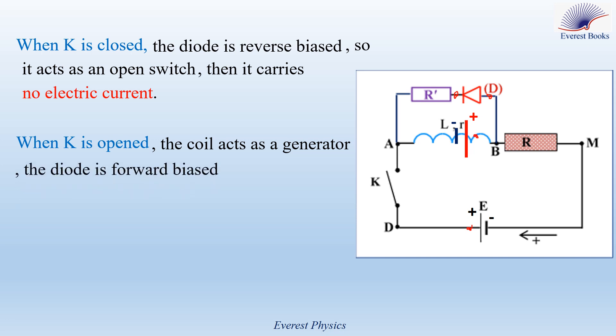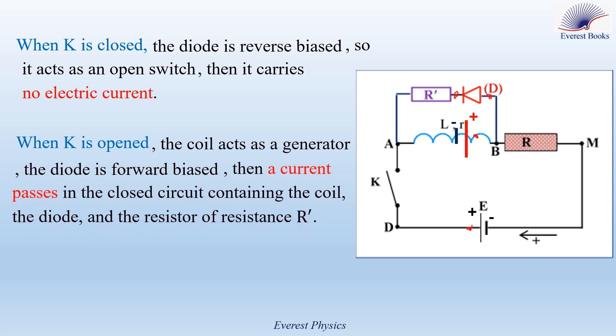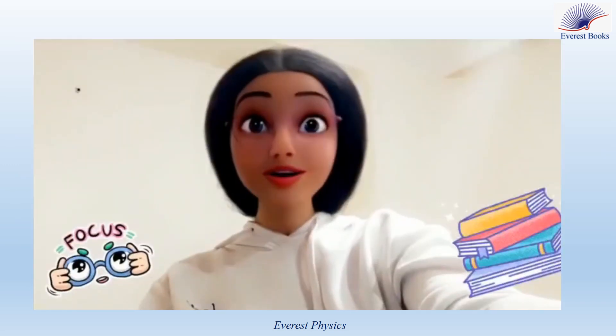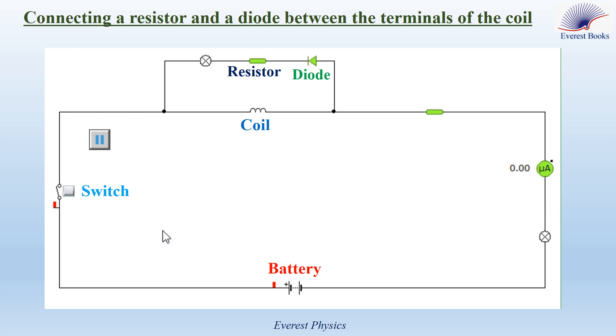A current passes in the closed circuit containing the coil, the diode, and the resistor R'. The magnetic energy stored in the coil is converted into thermal energy in the resistance of this circuit. Hence, no more sparks appear at the switch contacts. Focus, please — this is important. Observe this simulation.